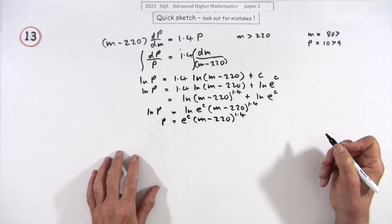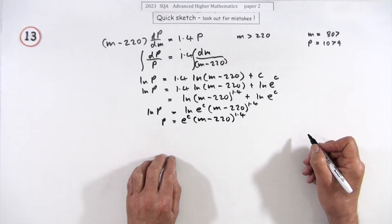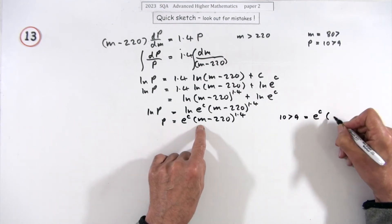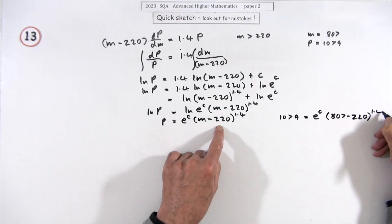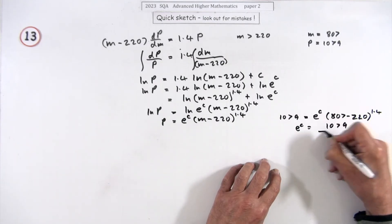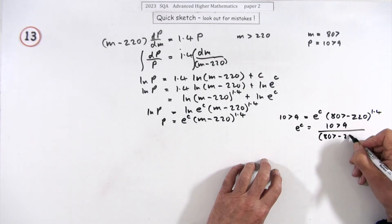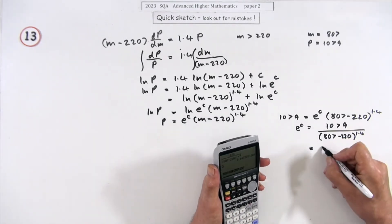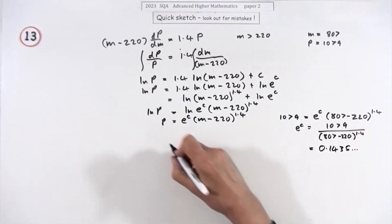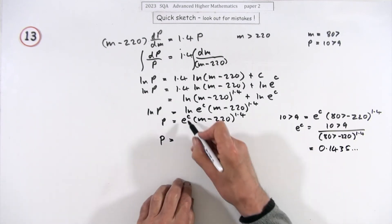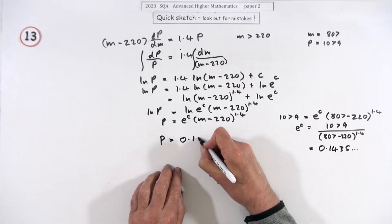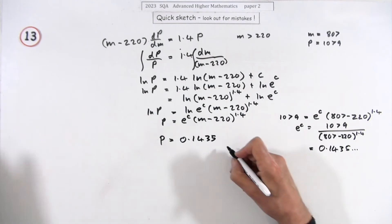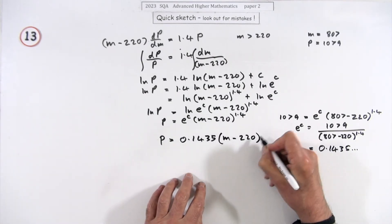Now substitute in the given values: 1079 = e^c times (807 minus 220)^1.4. That gives e^c = 1079 divided by 587^1.4, which works out to approximately 0.1435. You don't need to find c explicitly — just this number. So the final answer is p = 0.1435 times (m minus 220)^1.4, keeping four significant figures.